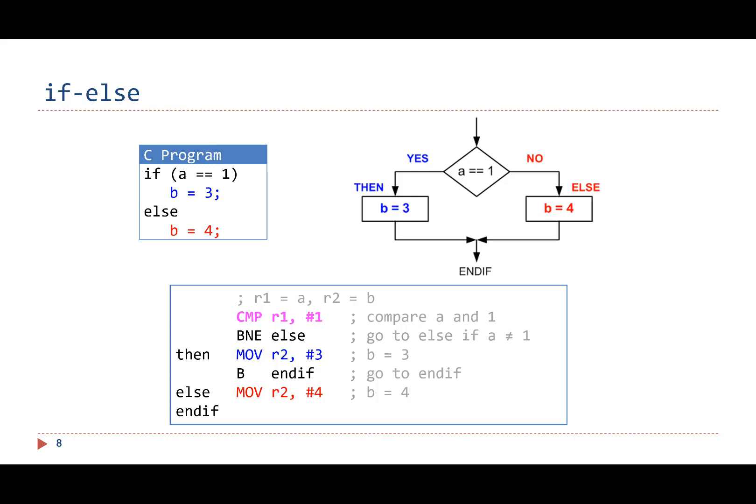Now, let's see how to implement if-else in assembly by using branch instructions. Assume the value of A is stored in register R1 and the value of B in register R2.